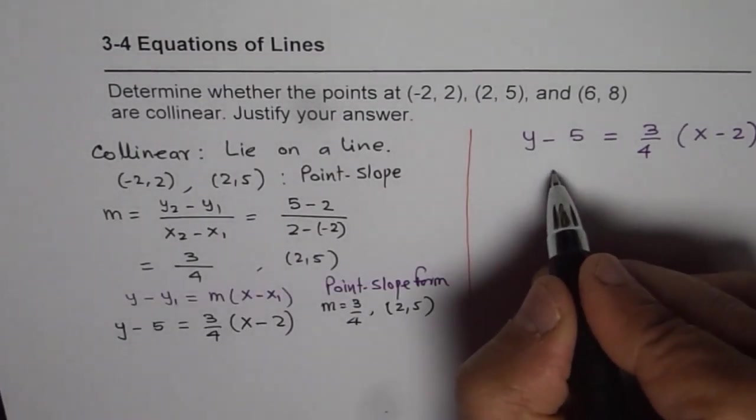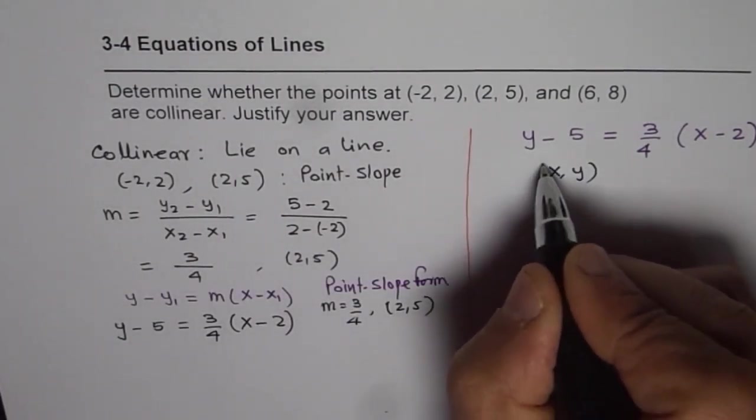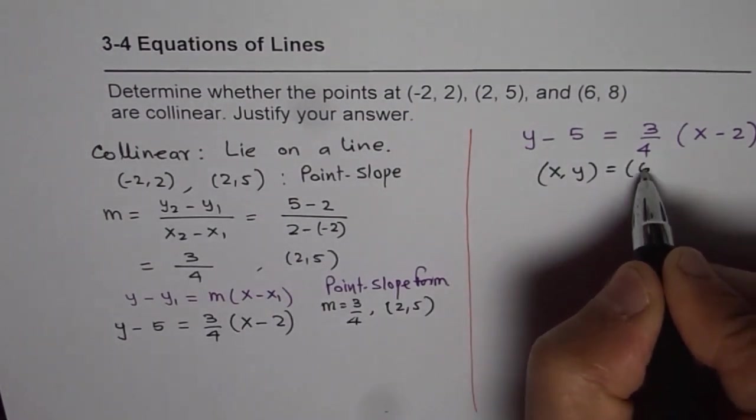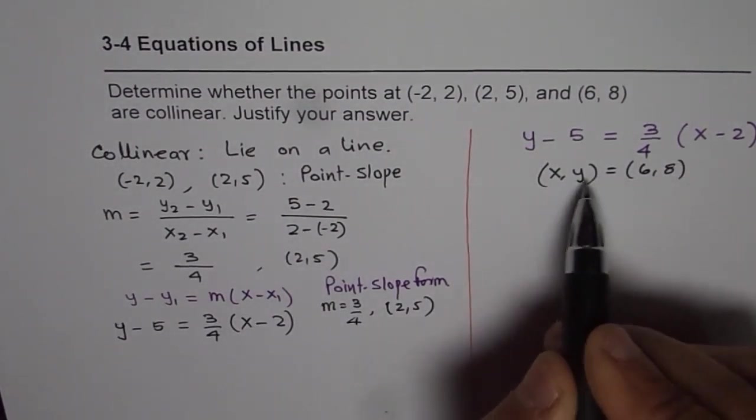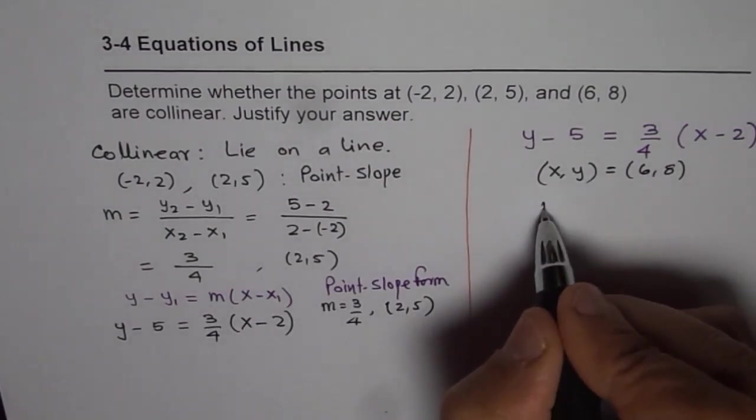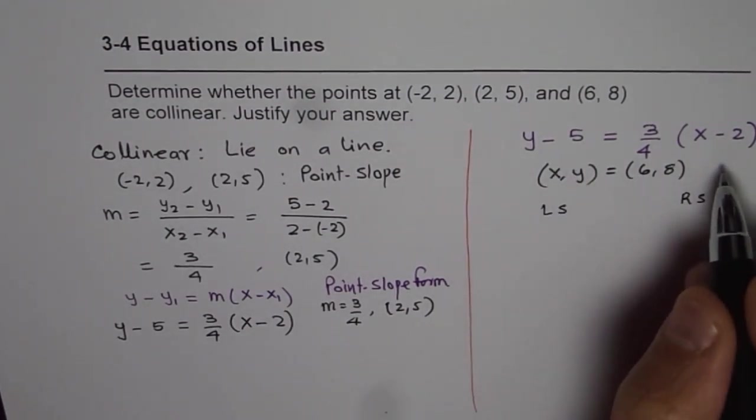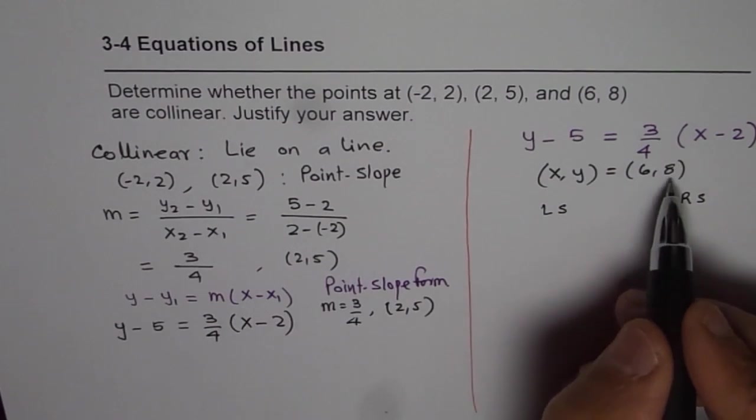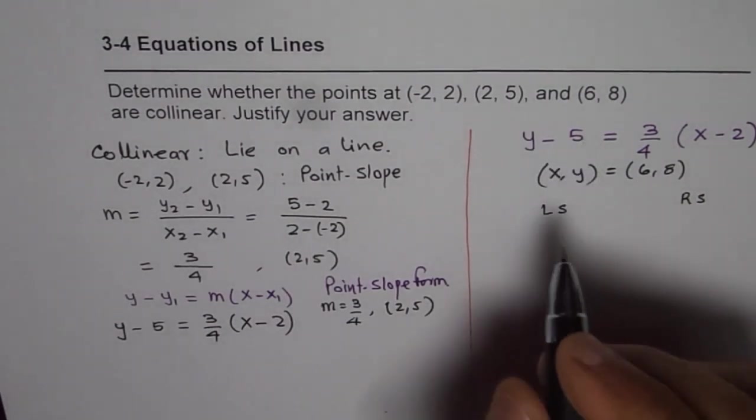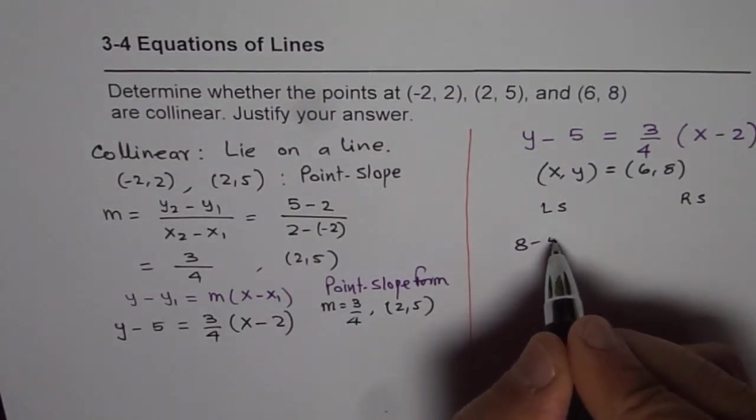We need to verify that the point (6, 8)—let's call x, y equals (6, 8)—lies on this line or not. So let's solve for the left side and the right side and check whether both are the same or not.